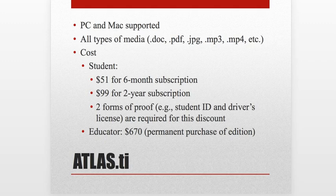The process for getting approved for a student discount is quite lengthy. Be aware that they require two forms of matching ID before you're allowed to purchase the program. As an educator, you can buy it for $670 or so, and that's a permanent purchase of that edition. When new editions come out, it's a cheaper renewal fee to get a new edition downloaded to your computer.